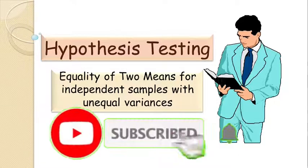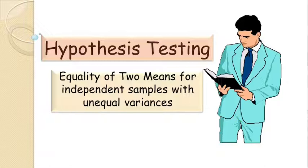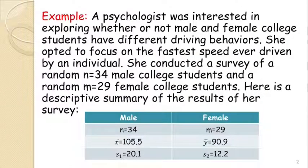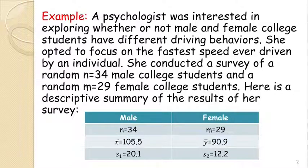Hello everyone, welcome to Statistics. Today we will work out a problem on hypothesis testing on equality of two means for independent samples with unequal variances. A psychologist was interested in exploring whether or not male and female college students have different driving behaviors. She focused on the fastest speed ever driven by an individual, conducting a survey of 34 male and 29 female college students.